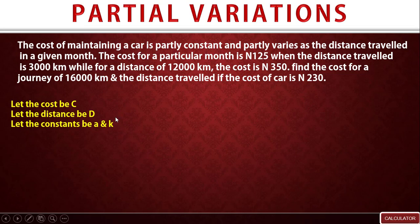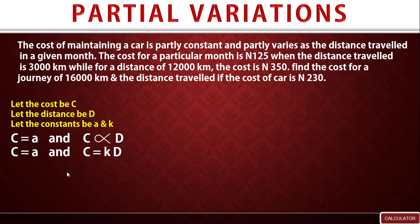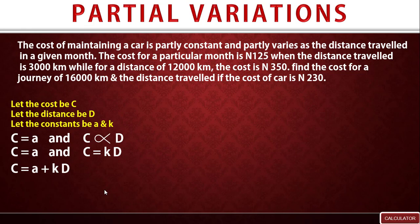Representing the statements mathematically: the cost of maintaining a car is partly constant means C equals A. The cost partly varies as the distance traveled means C is directly proportional to D. Changing the proportional sign gives C equals kD. Combining these two together, we have C equals A plus kD. This is our connecting formula.